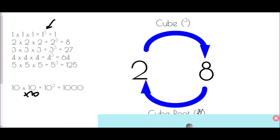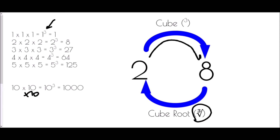Just like with squares, we have a symbol for cube and also for its reverse — the cube root. The cube root uses the same tick symbol but with a little three. If I cube two, two cubed is eight. So the cube root asks: which number did I cube to make eight? I cubed two, so the cube root of eight is two.